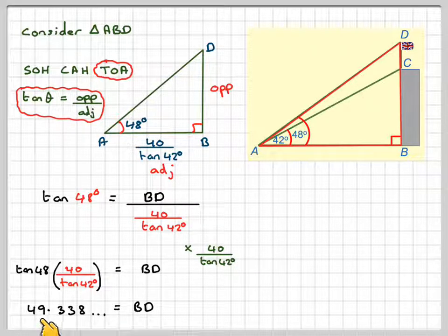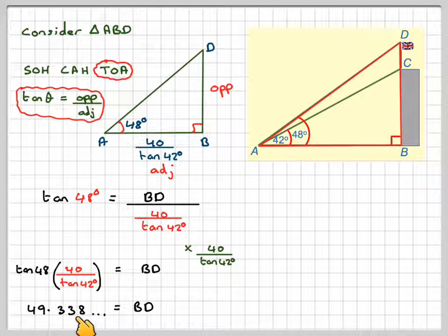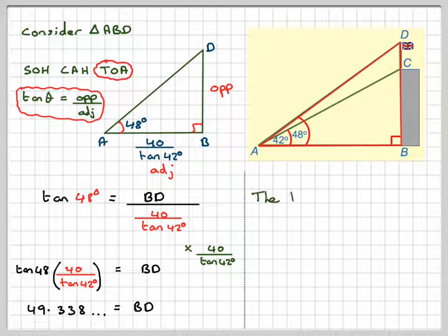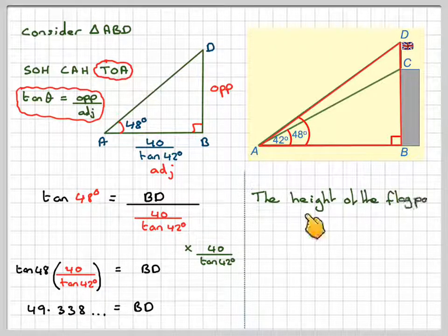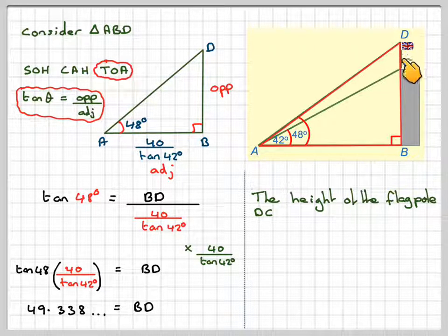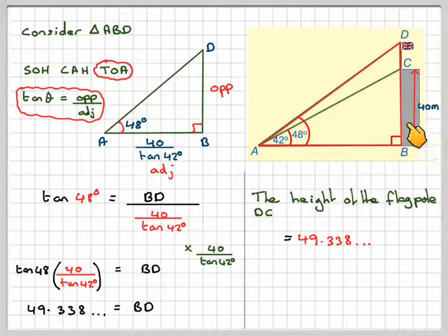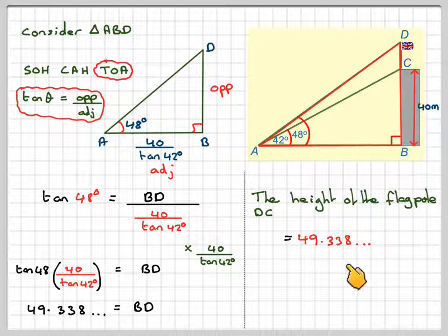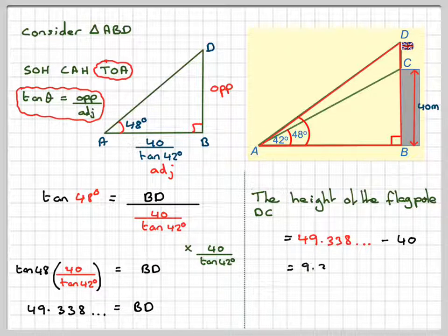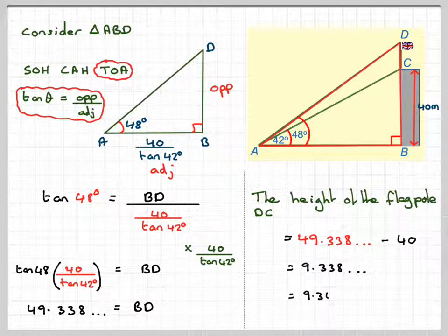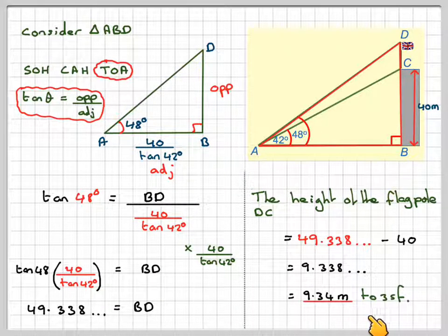BD, when you work it out, is 49.338. We don't need to round it off yet. We want the height of the flagpole, that's what the question was asking for. So that's going to be this height here, which is 49.338 minus the 40 that we know given in the question. So it gives a height of 9.338 or 9.34 meters correct to three significant figures.